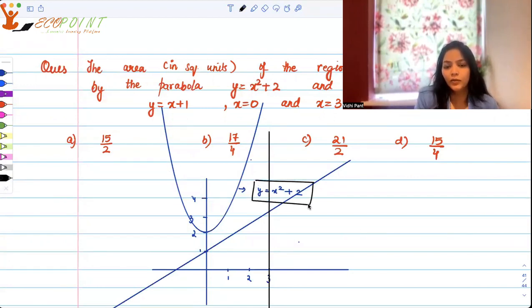So just create a parabola y equals x squared plus 2. It will be intersecting the y-axis here at 2. So this point is 0, 2 where x is 0, y is 2.